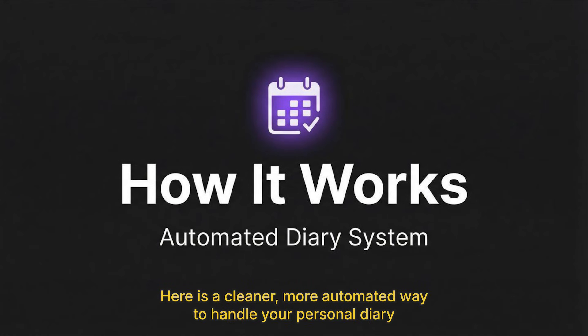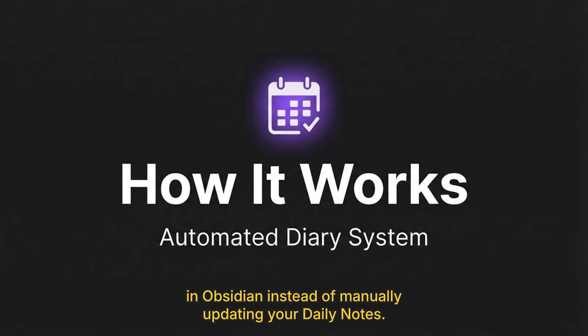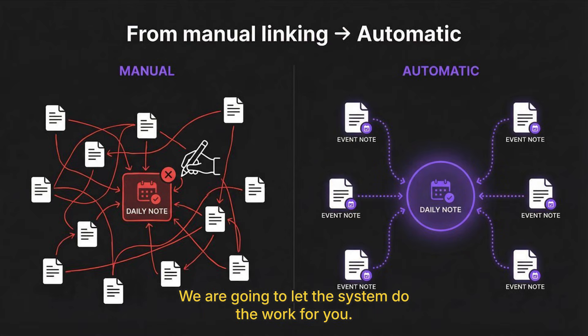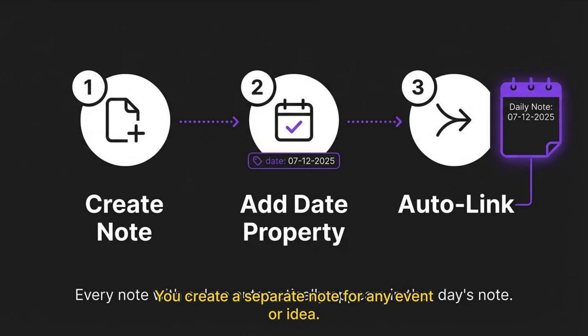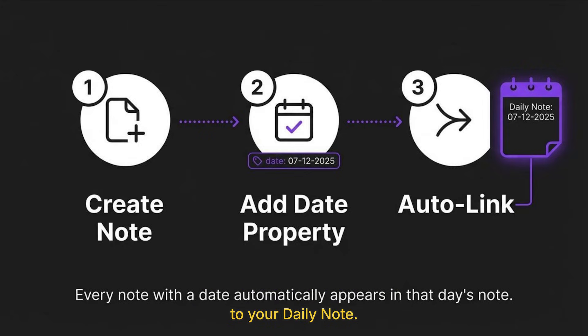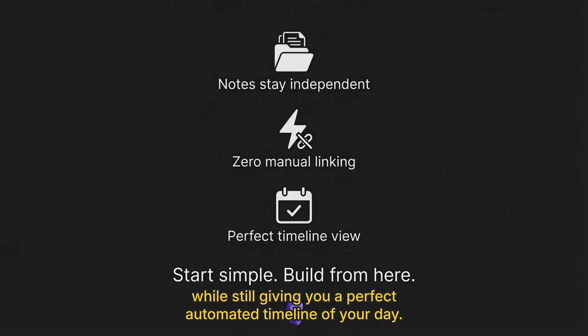Here is a cleaner, more automated way to handle your personal diary in Obsidian. Instead of manually updating your daily note, we are going to let the system do the work for you. The concept is simple: you create a separate note for any event or idea, add the date in the properties, and it automatically links itself to your daily note. This keeps your meaningful notes independent, while still giving you a perfect automated timeline of your day.